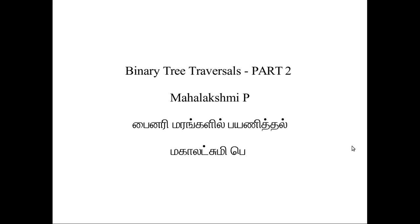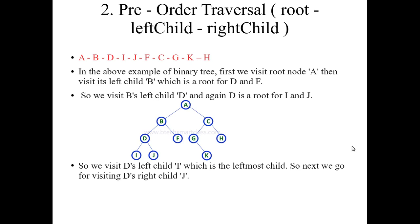Hi, in the last video we have seen about the inorder traversal, which is one of the types of binary tree traversal. Now we will see about the preorder traversal. In preorder traversal, 'pre' represents that the root should be visited priorly. So the order of traversal in preorder traversal is: root first, then left child, then right child.